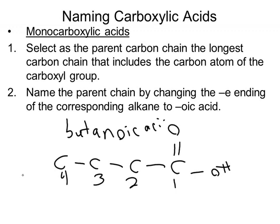The oic acid is always going to be the name ending for carboxylic acids. We don't need a number out here. There's no need for a number because we know that the carboxyl group is always on carbon number one. The only thing that's going to precede the parent chain name is if there are any substituents out on the rest of the carbon.